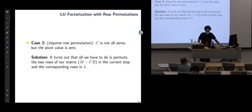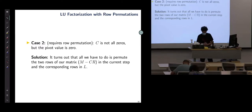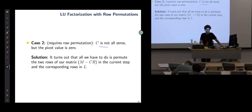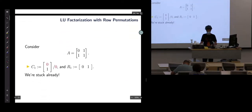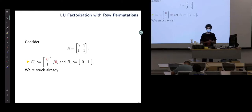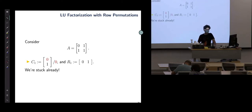Case 2 is where we generalize — it's a little more involved. Here C is not all zeros, but the pivot is zero. Consider a 2×2 matrix with 0 and 1 in the first row and 1 and 1 in the second row. You start LU, pick the first column divided by the pivot which is 0 — we're stuck already in the first step. What can we do?